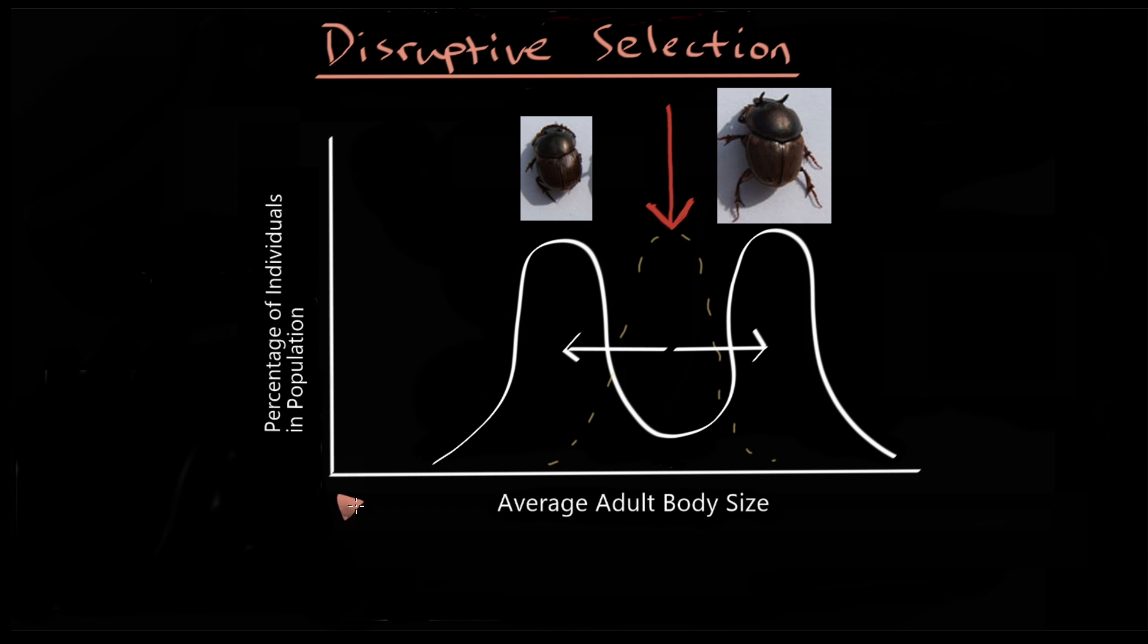Disruptive selection selects for both extremes on the spectrum to the exclusion of the moderate trait in the distribution. But there's also a form of selection that is the opposite of disruptive selection.